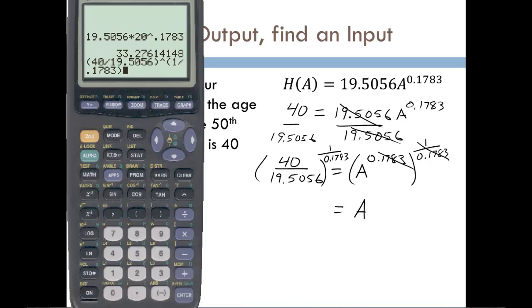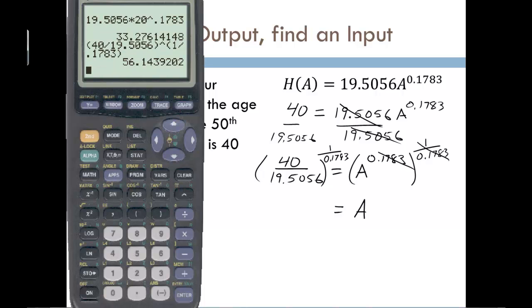Now when you type in this expression and you do the fraction exponent that has to be in parentheses. So make sure you type that in parentheses on your calculator. And if we compute this we get 56.14 and this is in months.